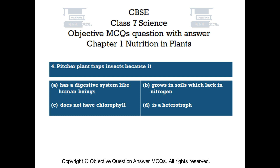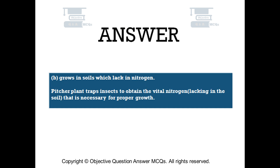The right answer is option B: grows in soils which lack in nitrogen. Pitcher plant traps insects to obtain the vital nitrogen, lacking in the soil, that is necessary for proper growth.